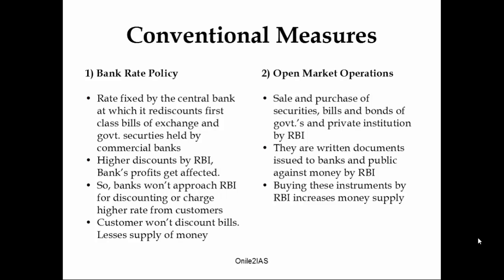The second measure is open market operations — sale and purchase of securities, bills and bonds of governments and private institutions by RBI. Securities, bills and bonds are written documents issued to banks and the public against money by RBI. In case of inflation, RBI sells these instruments to the public and banks, taking money from them. This reduces the supply of money in the market, thus controlling inflation. To increase money supply, RBI does the opposite — buying these instruments and giving back money to the public and commercial banks.